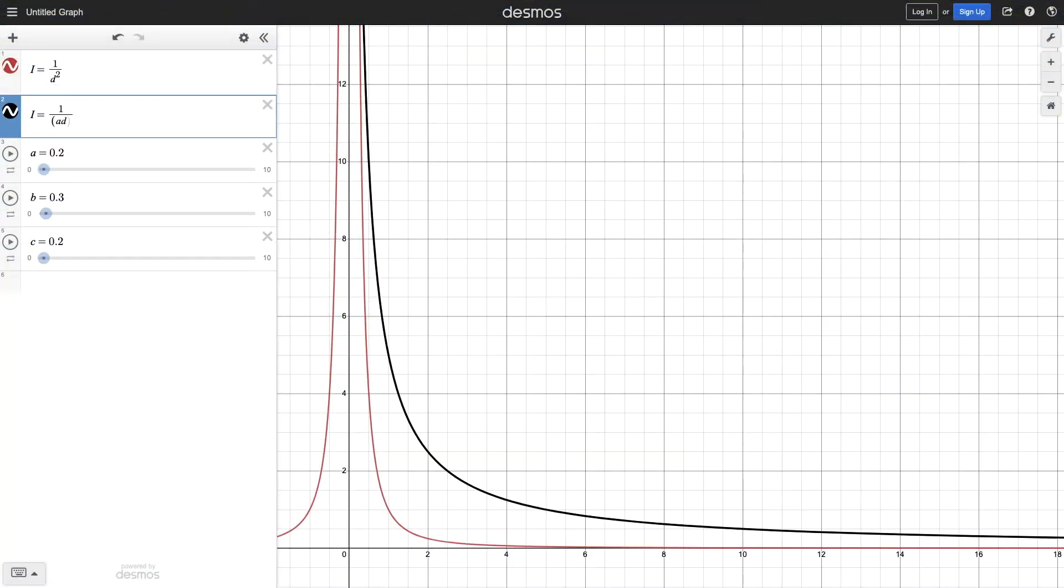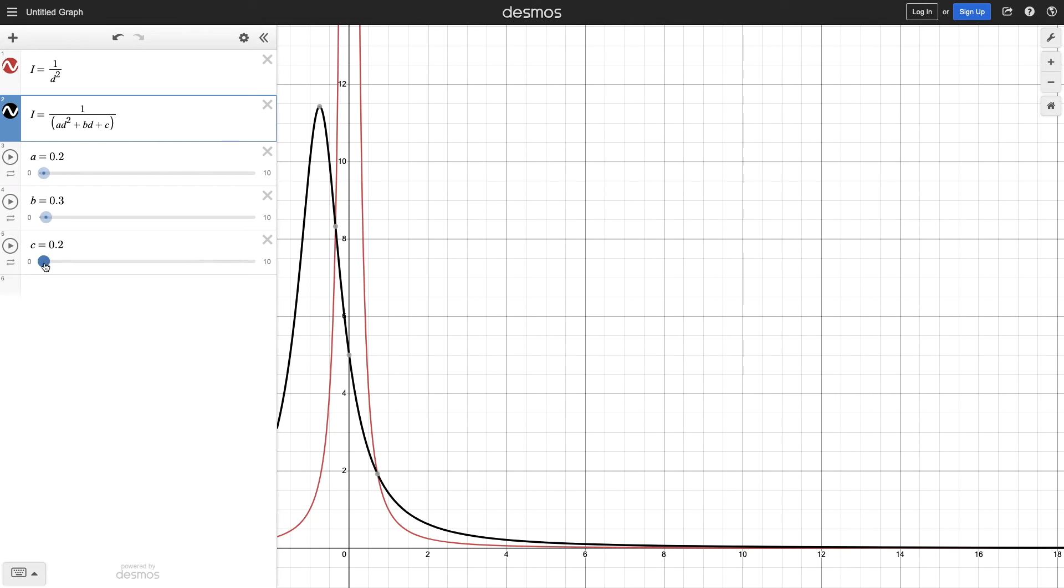C ensures that the brightness doesn't go off to infinity when the distance is zero. And finding a good combination of A and B can make the fall off in brightness as gentle or as sharp as you want.